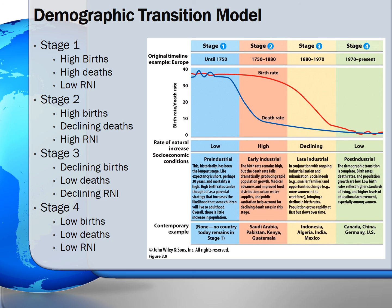The second stage is early industrial. During this stage, the birth rates remain high — children are still needed to work since technological advances are in the beginning stages. However, death rates drop significantly due to medical advances. This gap between high birth rates and low death rates produces very high rates of natural increase and the population explodes.